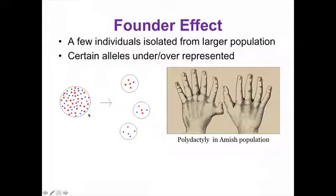Example of this is the Amish. So when the Amish formed their smaller communities, they had certain alleles that they took with them. And one that was passed along a lot was polydactyly. So there's a gene that causes individuals to be born with extra fingers, extra toes.